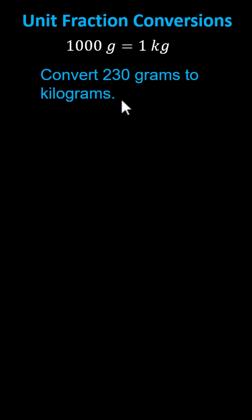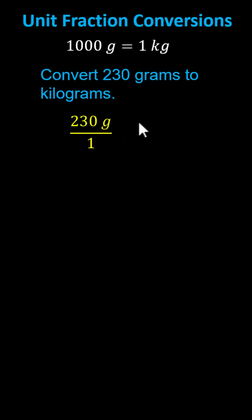In this lesson, we'll convert 230 grams to kilograms using a unit fraction or unit factor. We first write 230 grams as a fraction with the denominator of one, and now we want to multiply by a unit fraction using the conversion 1,000 grams equals one kilogram, so that the grams will simplify out and we're left with kilograms.